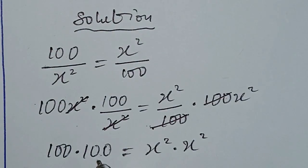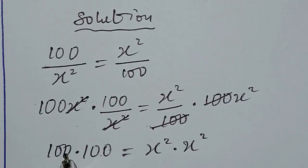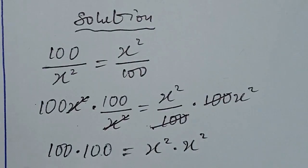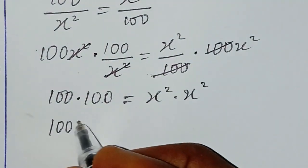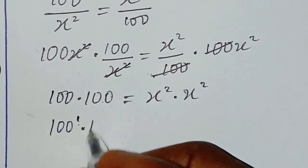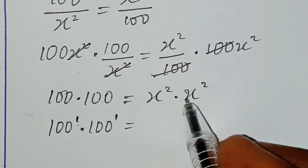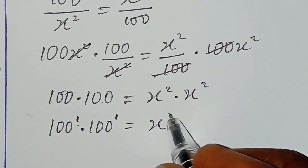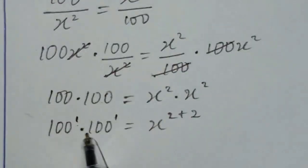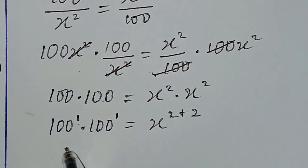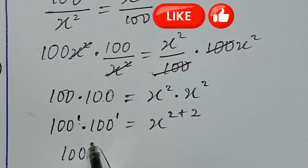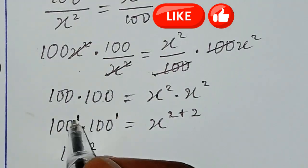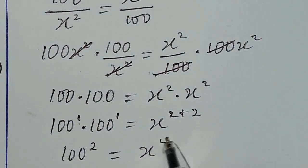Now what we need to do here is consider the rule of exponents. This becomes base a with the power of one, meaning we are going to add the powers together. So we have 100 to power 1 multiplied by 100 to power 1, and adding the powers together we get x to the power of 2 plus 2. This gives us 100 to the power of 2 equal to x to the power of 4.